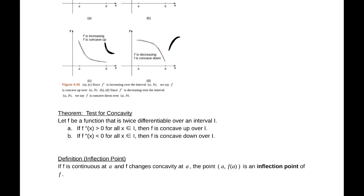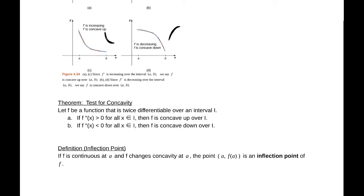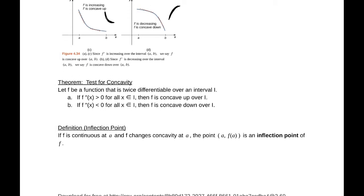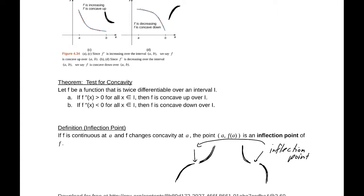We have a test for concavity: if f is twice differentiable, then f''(x) > 0 means it is concave up, and f''(x) < 0 means it is concave down — analogous to the first derivative test, just taking the derivative of the derivative. We also have the idea of an inflection point: a point where the concavity changes, going from concave down to concave up or concave up to concave down.